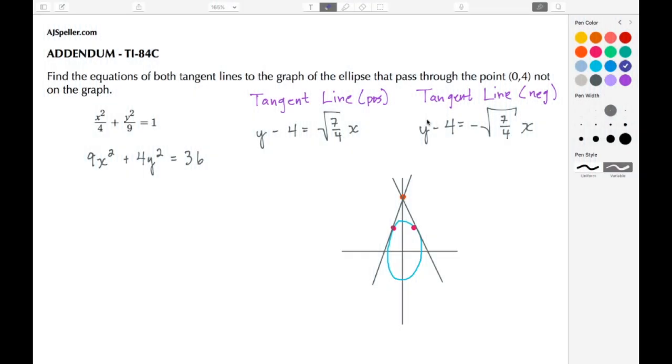Welcome to ajspeller.com. In today's tutorial, we're going to revisit a tutorial where we used a different technology to show the graph. This time we're going to use the TI-84C. We need to find the equations of both tangent lines to the graph of the ellipse that passes through the point (0,4), where (0,4) is not on the ellipse. Here's the basic sketch.